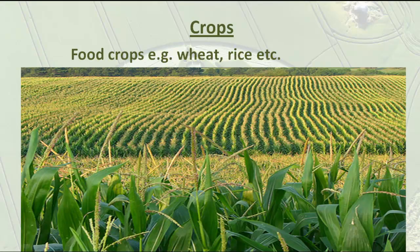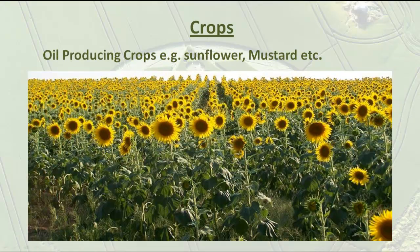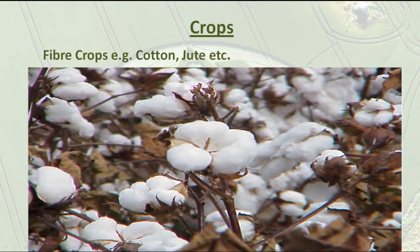Crops are mainly food crops — for example, wheat, rice. Oil-producing crops like sunflower and mustard, etc. Or fiber crops like cotton, jute, etc.